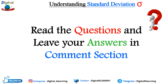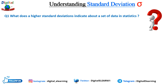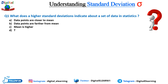Question number one: What does a highest standard deviation indicate about a set of data in statistics? The options are: (A) Data points are closer to the mean; (B) Data points are farther away from the mean; (C) Mean is spread; (D) There is no relation. I have covered this topic clearly in this video, so if you still don't know, please check the video again.